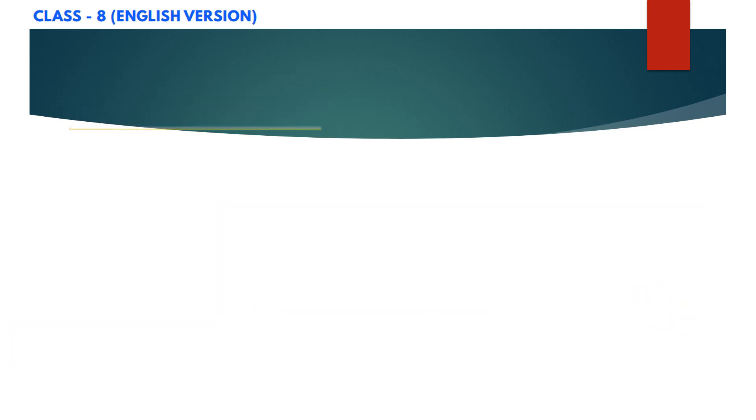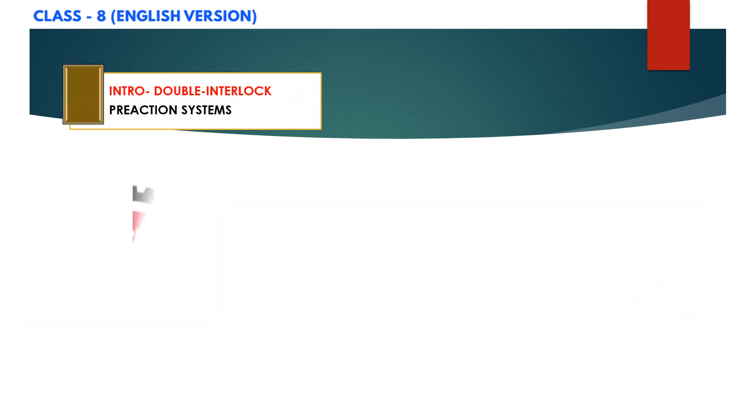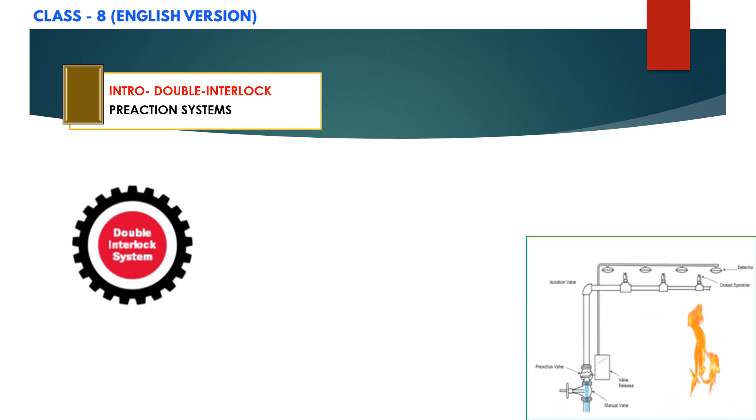Now let us go through double interlock preaction systems. In double interlock preaction systems, as you can see on your screen, preaction valve will only activate upon operation of both the detection devices and these closed sprinklers.